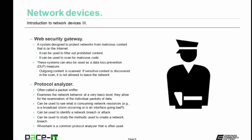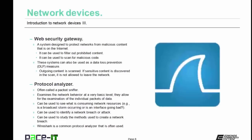First up is the Web Security Gateway, a system designed to protect networks from malicious content on the internet. It can be used to filter out prohibited content and to scan for malicious code. In some cases, these systems can also be used as a data loss prevention measure, where all outgoing content is scanned; if sensitive content is discovered, it's not allowed to leave the network. This helps entities keep their secrets within their own networks.